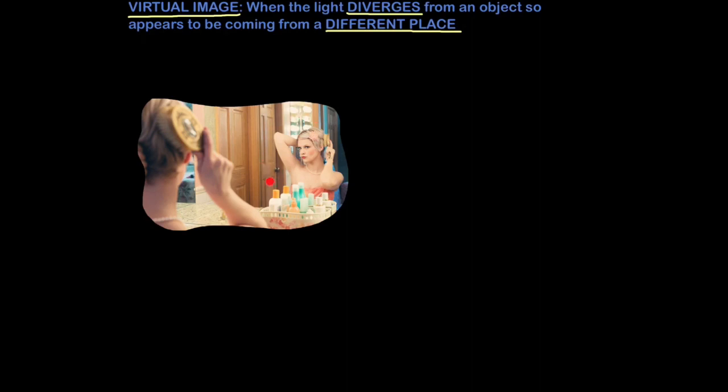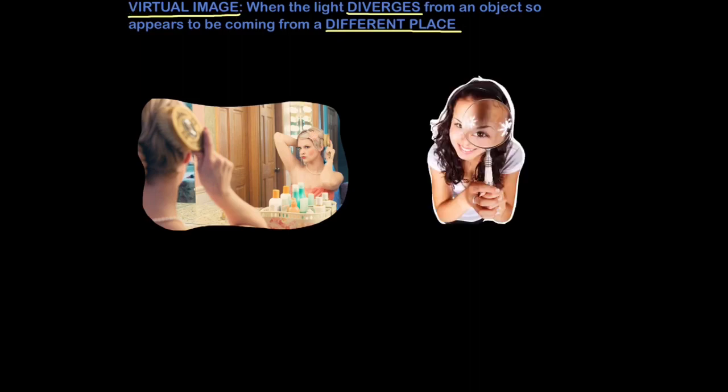But this is an illusion. It's not really there. The image isn't really behind the screen, so it is a virtual image. Similarly, when we look through a magnifying glass, the image appears more distant and bigger. This again is a virtual image because the light appears to be coming from someplace it isn't.